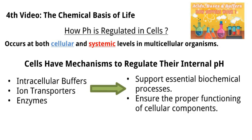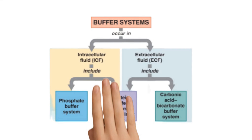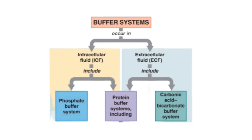The body employs distinct buffer systems to regulate pH levels. Within cells, the intracellular phosphate buffer system plays a crucial role, using the hydrogen phosphate system to maintain intracellular pH balance. On the extracellular front, the bicarbonate buffer system takes center stage, operating primarily in the bloodstream and extracellular fluids. Meanwhile, the protein buffer system demonstrates its versatility, functioning effectively in both intra- and extracellular spaces.